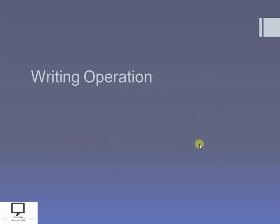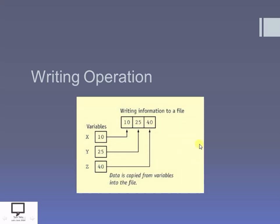Now let's start with the primitive operation of writing onto the file. Suppose I have three separate variables with values: variable x is 10, variable y is 25, z is 40. If I want to write this data onto the file, with the help of the file pointer I will copy the content of each variable into the file. After copying the first variable the file pointer advances, then the second variable is written, the file pointer advances again, and the third variable is written. In this way data is copied from variables into the file — that is the write operation.